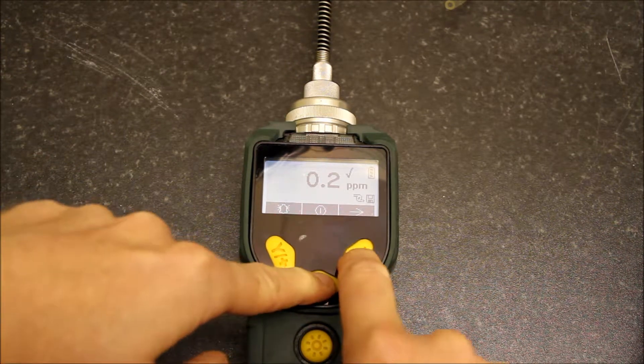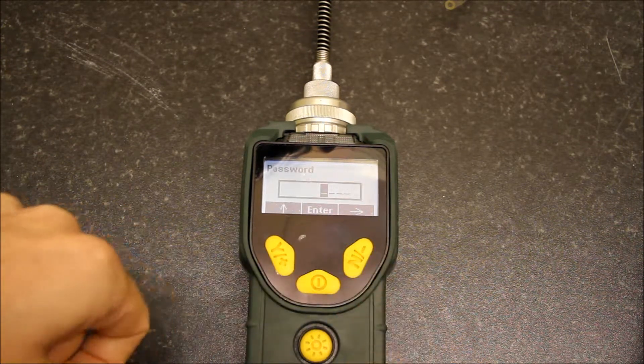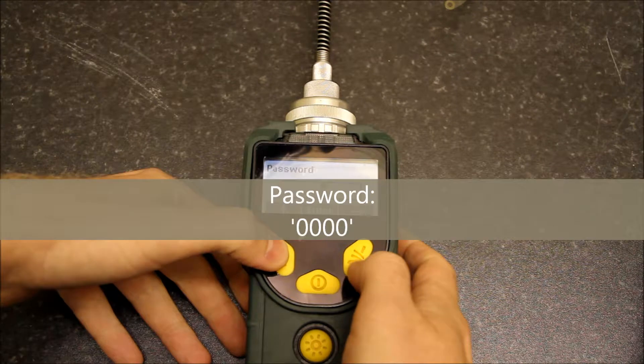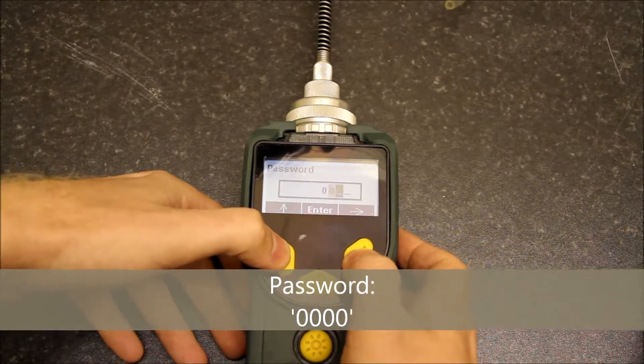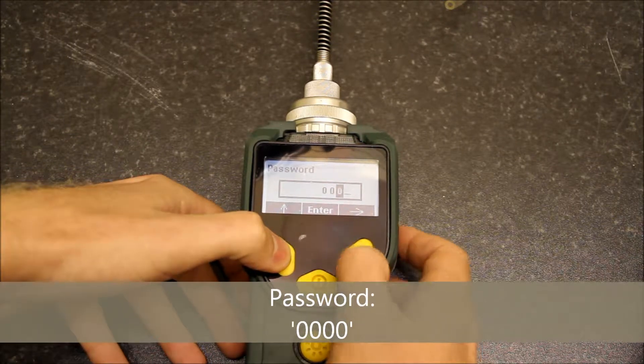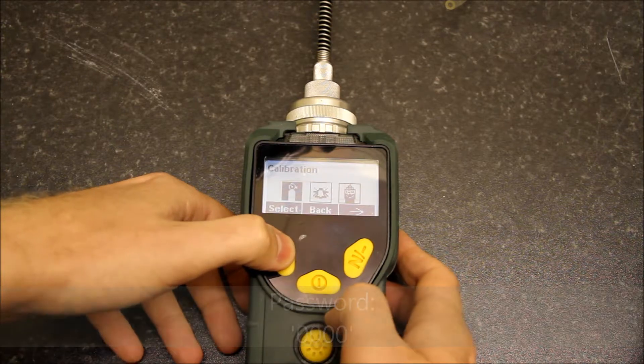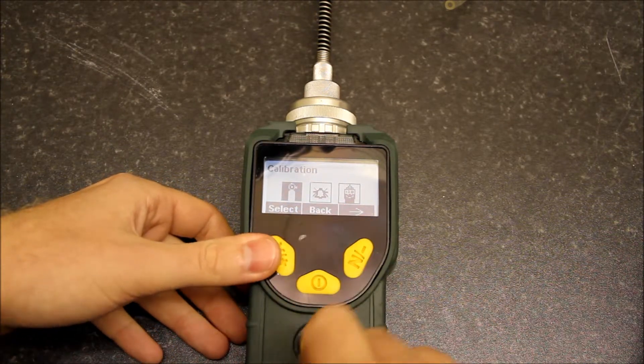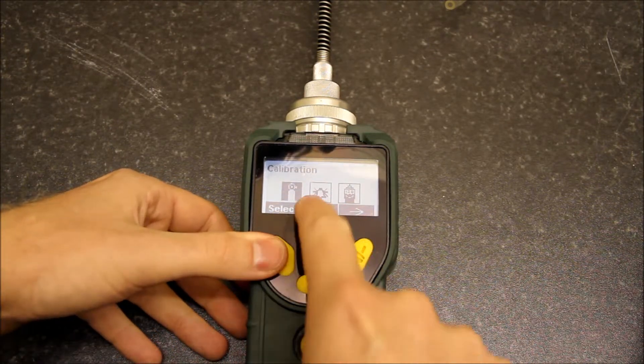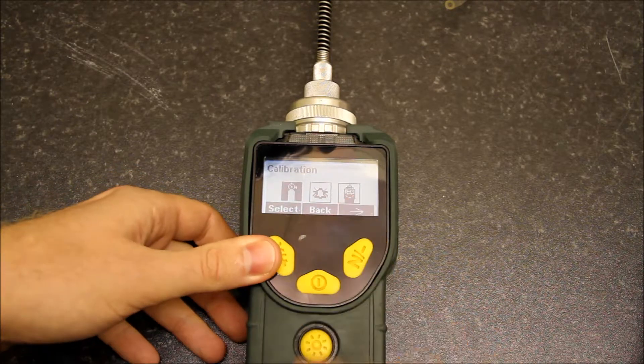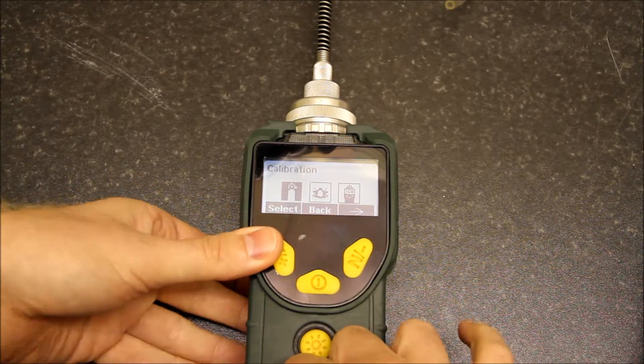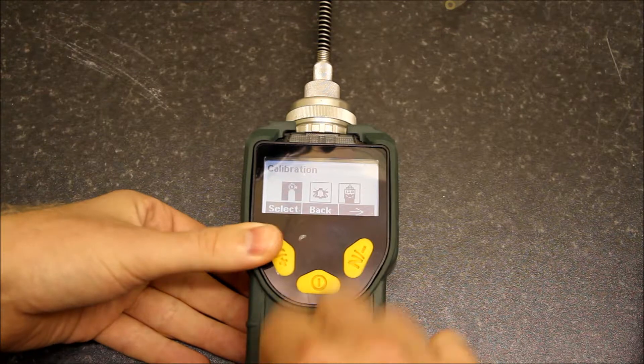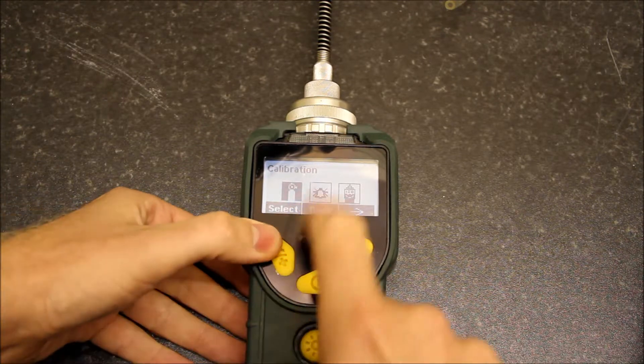If we press power and no, we can get into the calibration menu. It's asking for a password here, so press zero, zero, zero, and zero. We've got a few menus: calibration menu, alarms menu, and monitor setup. For us, the only real menus we're using are the calibration menu and the alarms menu.